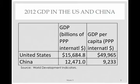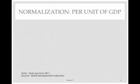Per capita GDP is better than total GDP for comparing the level of economic activity across countries. Here's an example: this is 2012 GDP in the United States and China. Looking at the first column — GDP in billions of PPP international dollars — we see a $15,684.8 billion economy in the United States compared to China, the next biggest economy, at $12,471 billion. So those are pretty close; China is catching up. But when we look at GDP per capita, dividing by the number of people, the United States is way ahead — producing about nine times more per person.